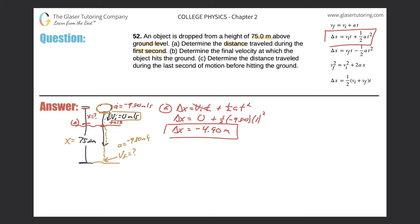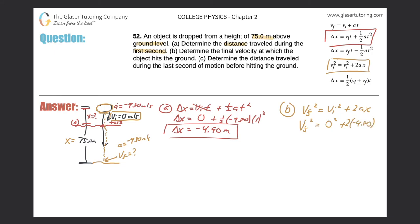Do we know a formula that relates displacement, initial velocity, acceleration, and final velocity? Yes — equation number four. Final velocity squared equals initial velocity squared plus two times the acceleration multiplied by the displacement. The initial velocity was zero, so that's just zero, plus two times negative 9.80 times negative 75. This is important — the displacement must be negative 75. Since there's no initial velocity, the magnitude will be right, but the sign would be messed up if it weren't negative.